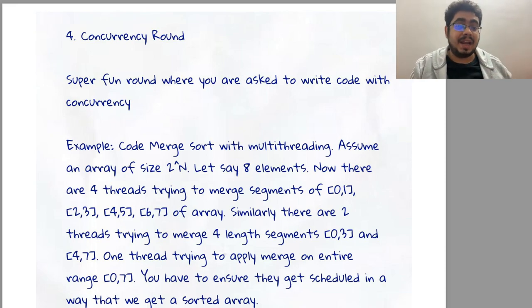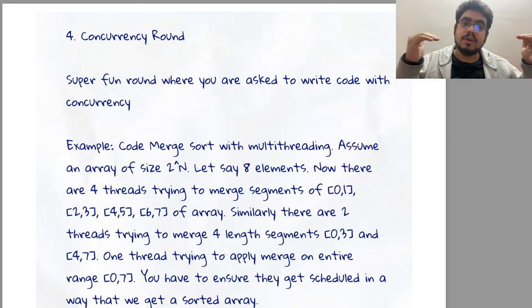For this, what you need to do is you need to first allow all the 2-length threads to run. Once all of them complete, then only you can allow 4-length threads to complete, and then lastly you can allow the 8-length thread to complete.